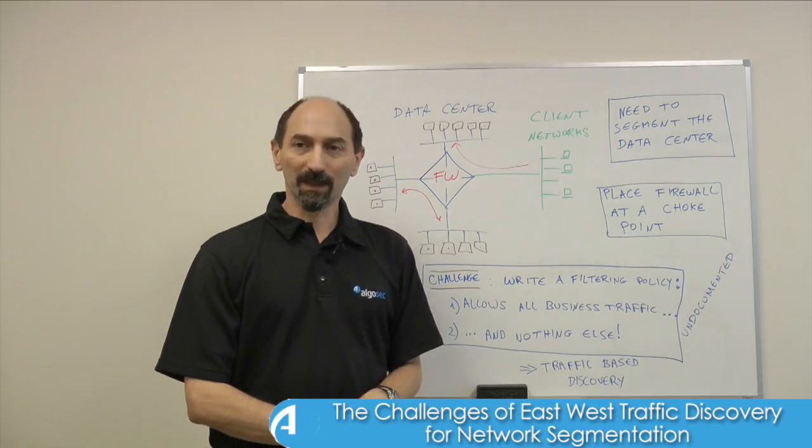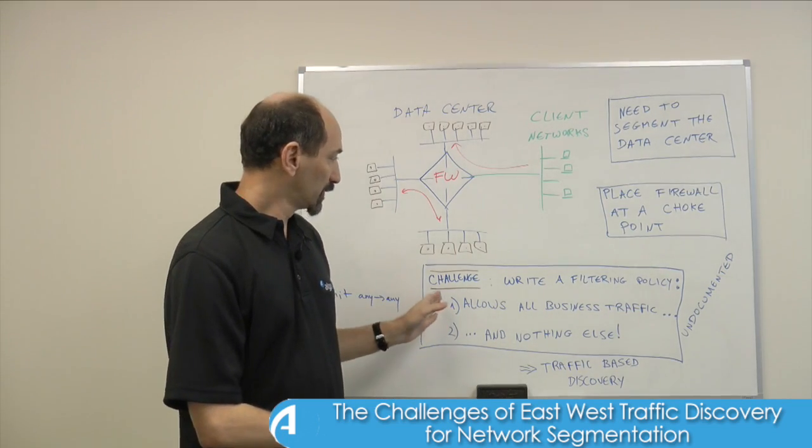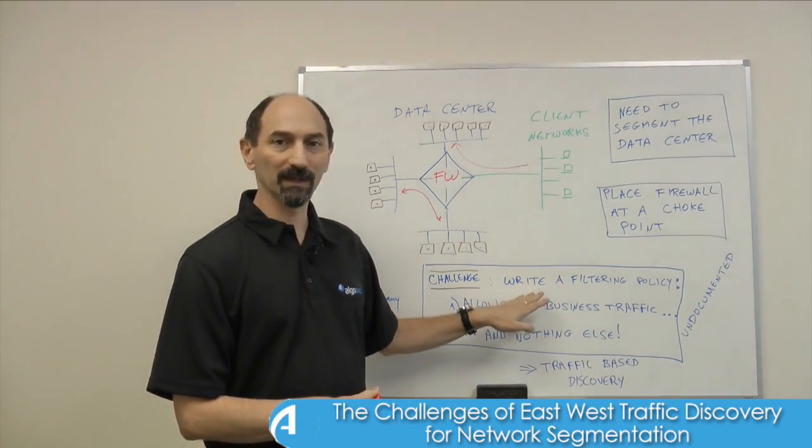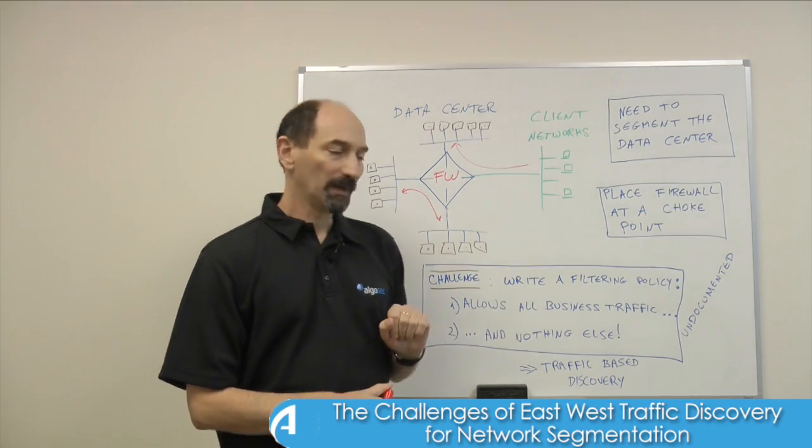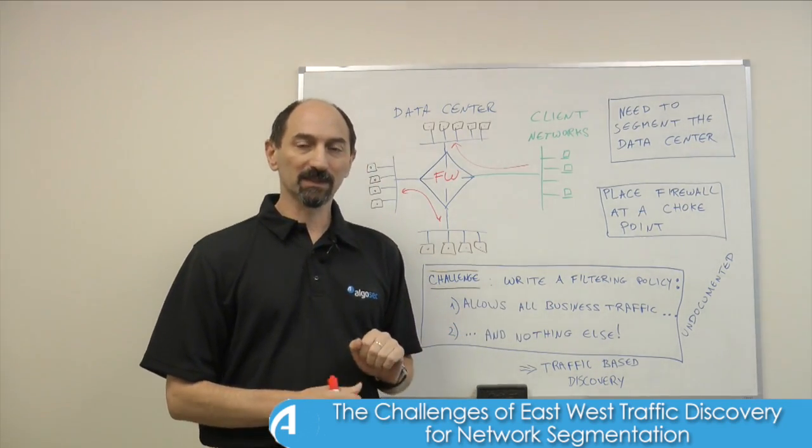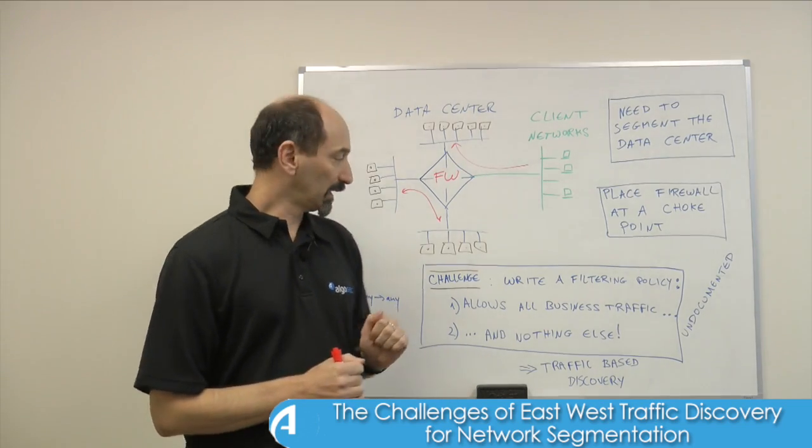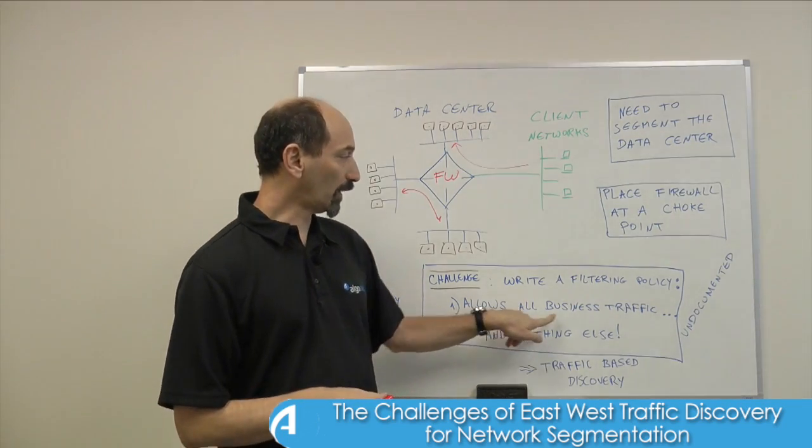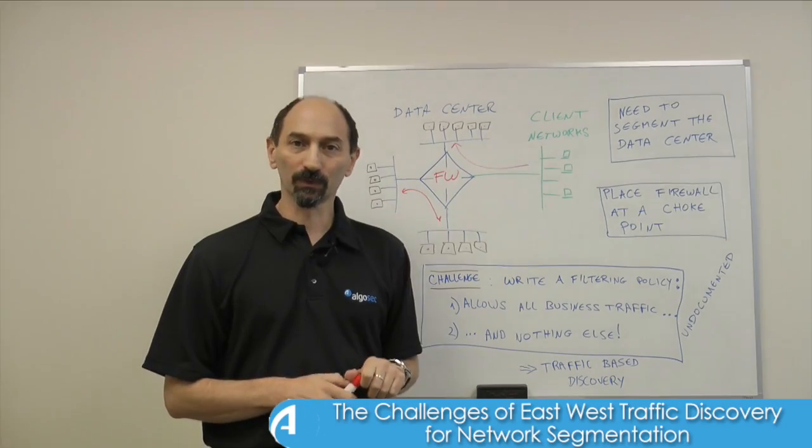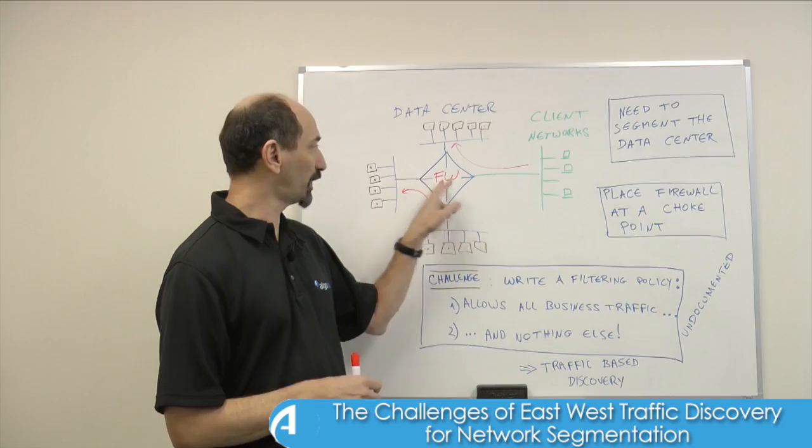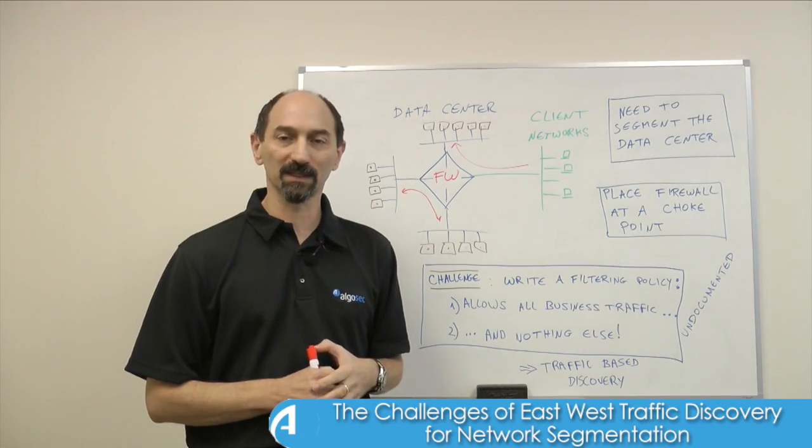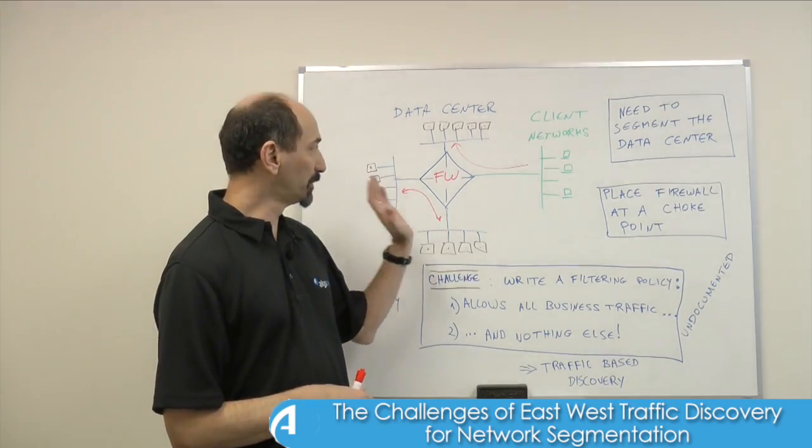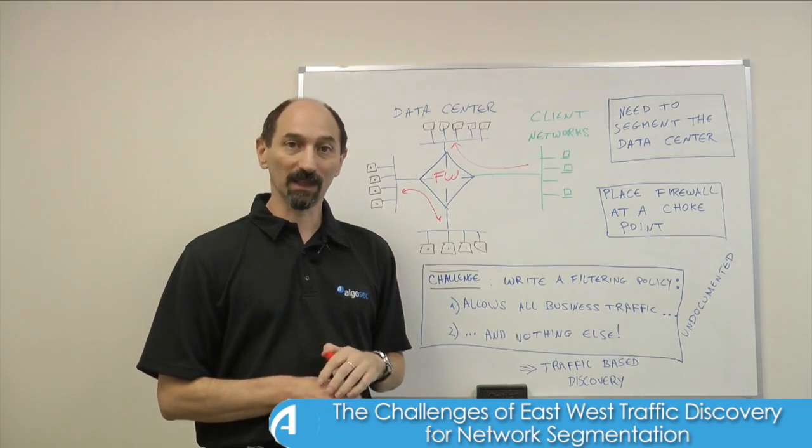So far so good, but you still have to face a pretty significant challenge of writing the filtering policy on that firewall. Writing the filtering policy really needs to be a balancing act that meets two goals. First of all, it needs to allow all the business traffic to go through because the last thing you want is for that new firewall in the middle of your data center to start blocking critical traffic.